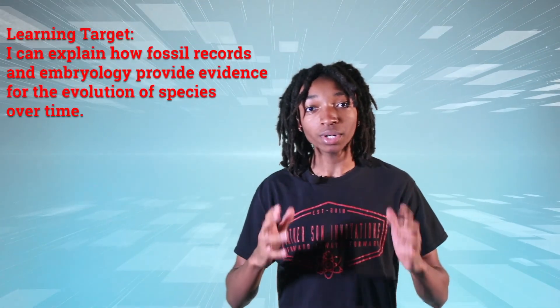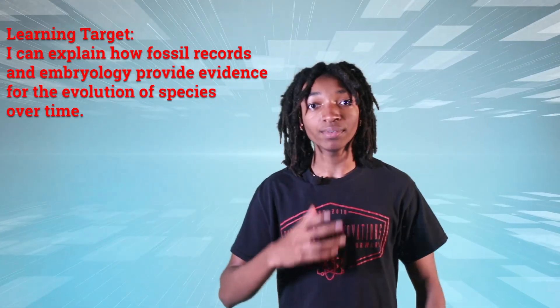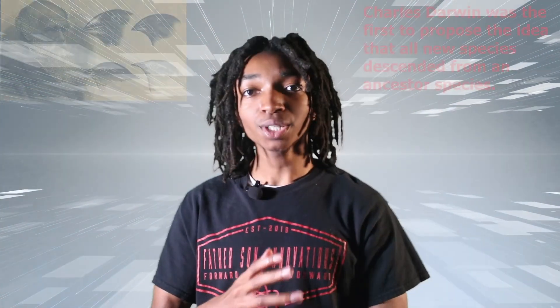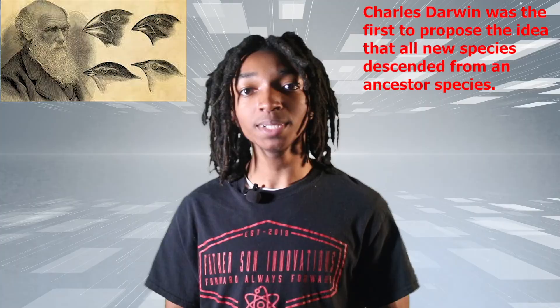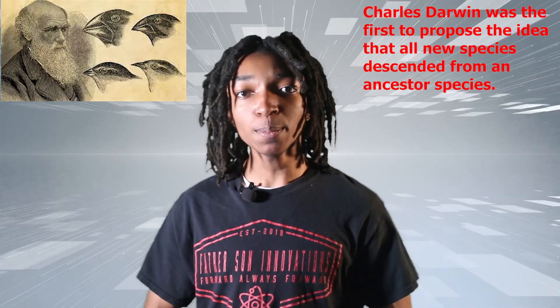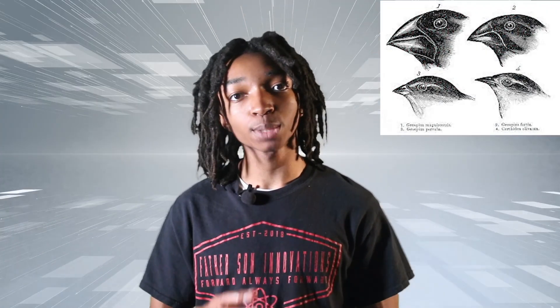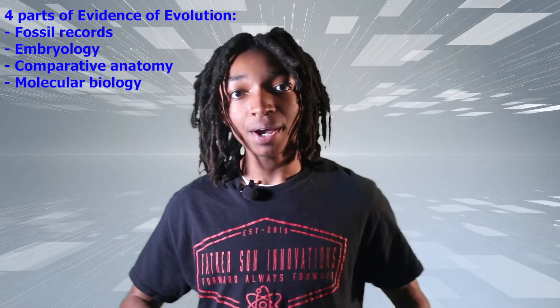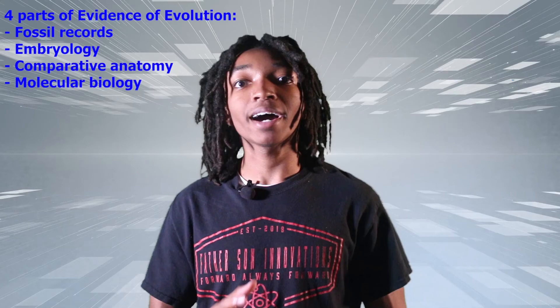Our learning target for today is: I can explain how fossil records and embryology provide evidence for the evolution of species over time. When Charles Darwin first proposed the idea that all species descend from an ancestor, he performed an exhaustive amount of research to provide as much evidence as possible. Today, the major pieces of evidence for this theory can be broken out into four parts: fossil records, embryology, comparative anatomy, and molecular biology.